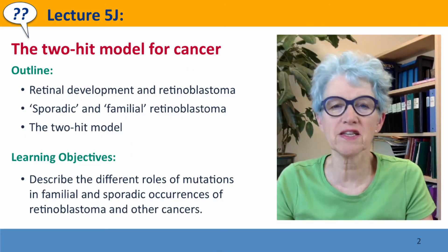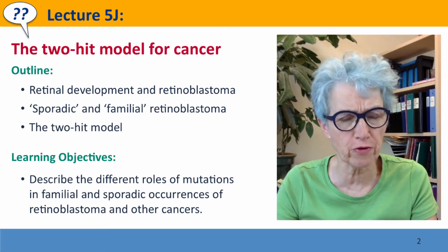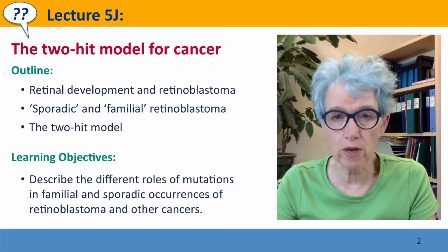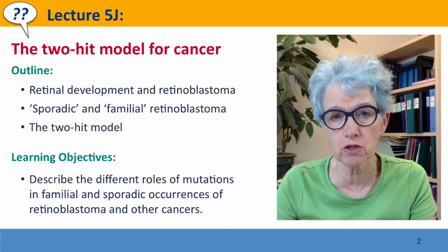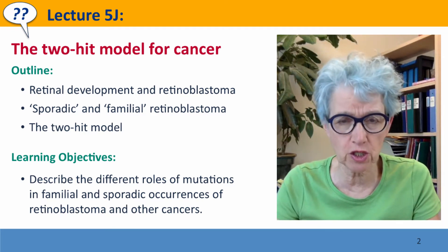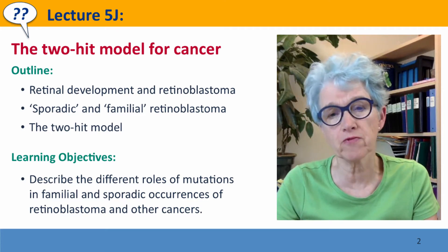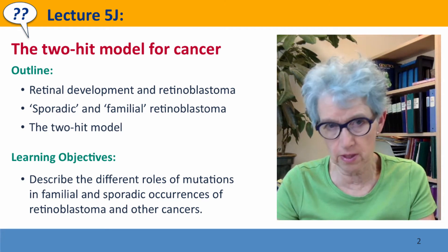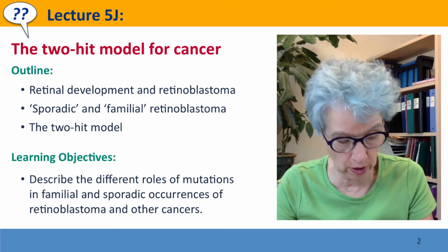Hi, everyone. Welcome back to Lecture 5J of Useful Genetics, where we're going to introduce the very important two-hit model for cancer. We'll talk about retinal development and a cancer of infants and small children called retinoblastoma, because this is a very good illustration of the two-hit model in action. We'll talk about sporadic and familial cases of retinoblastoma, and these terms apply to many other genetic diseases, not just cancers, and we'll talk about the two-hit model.